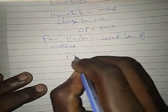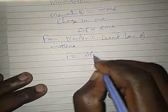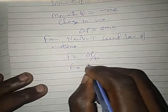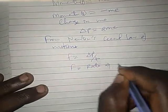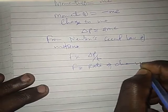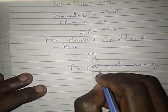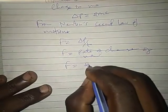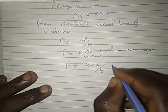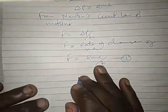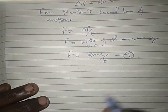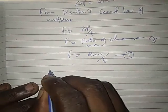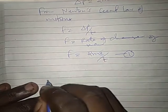So from Newton's second law of motion, we know that force is equal to change in P divided by T. Force is rate of change of momentum. So force equals change in P, which is 2MC divided by time. This we can call equation 1.